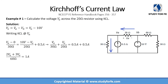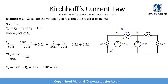All I've done is collect the terms: the sum of current entering the node on one side and the sum of current leaving the node on the other side. The sum of current entering equals the sum of current leaving. After that it's simple math — solving the equation for VA gives 12 volts. Since Vx equals VA minus VB, we get 12 volts minus 10 volts, which equals 2 volts.